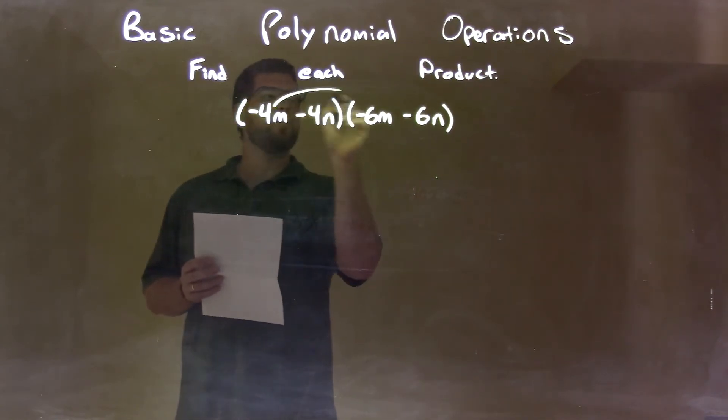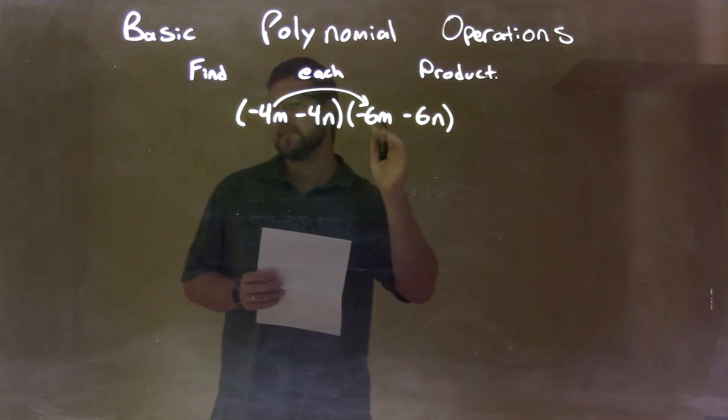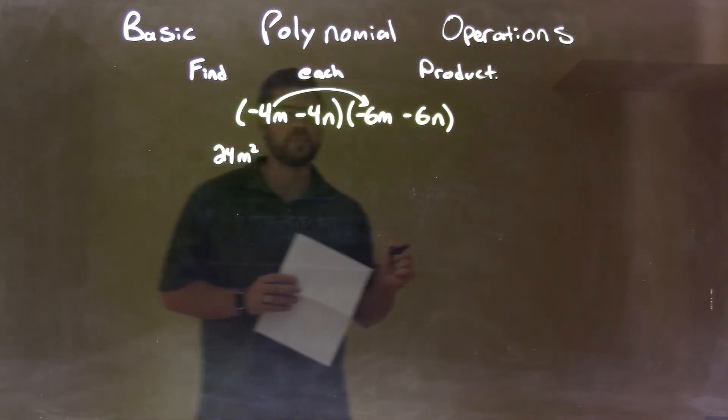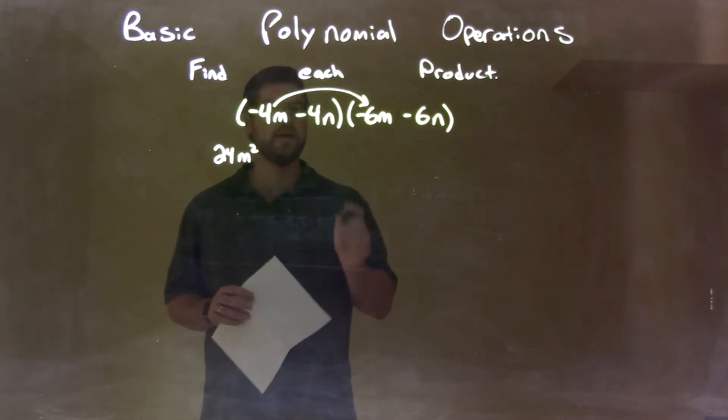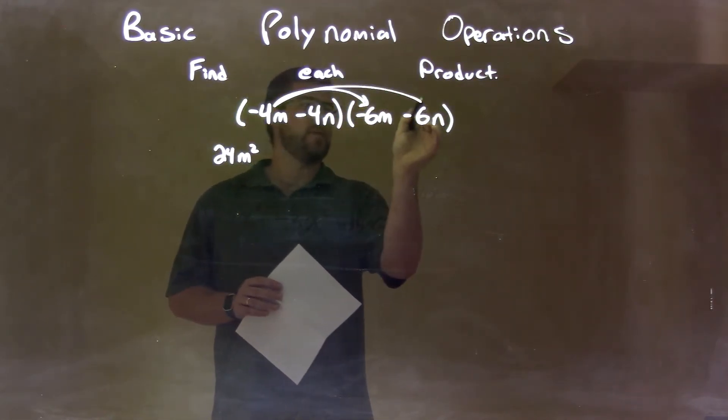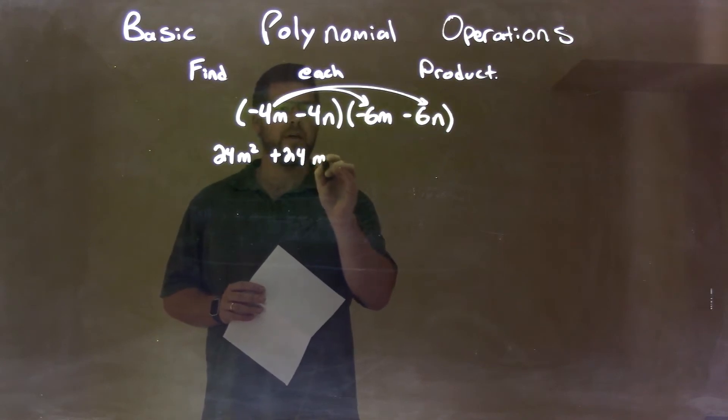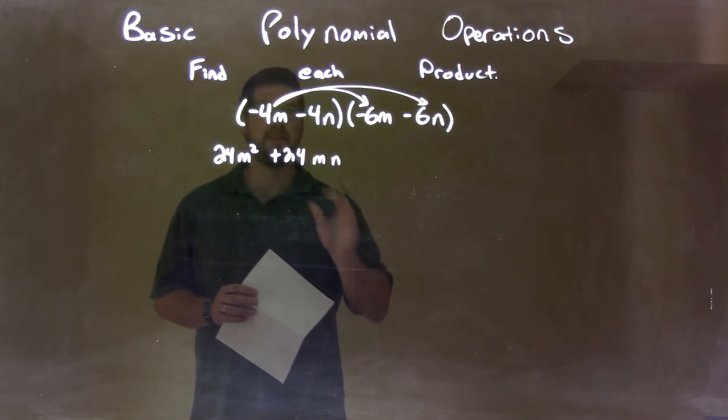Negative 4m times negative 6m is positive 24m squared. Then, negative 4m times negative 6n is positive 24, but it's m times n, mn.